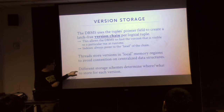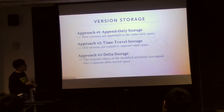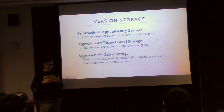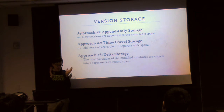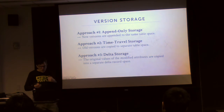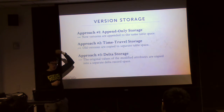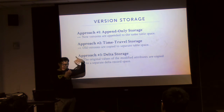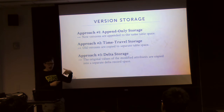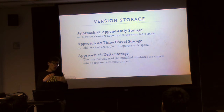Now for the different storage schemes, which determine where and what information we store for each new version. The three choices are append-only storage, time travel storage, and delta storage. At a high level they look kind of the same, but there are different implications and trade-offs. In append-only, you insert a new version of the tuple in the same table where all other tuples are stored. In time travel storage, you have a separate table where you insert older or newer versions. In delta storage, you only store the diff of the tuple attributes that got modified.